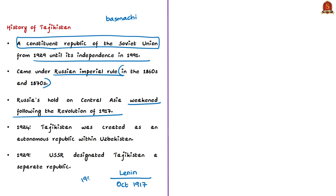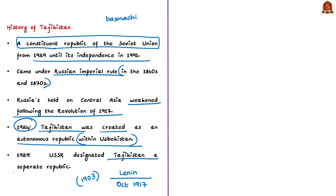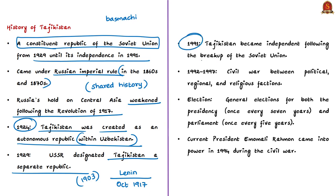Tajikistan was first created as an autonomous republic within Uzbekistan in 1924, and in 1929 the Soviet Union designated it as a separate republic. As a result of this shared history, ethnic Uzbeks form a substantial minority in Tajikistan, and ethnic Tajiks form an even larger minority in Uzbekistan. Tajikistan became independent in 1991 after the breakup of the Soviet Union, after which it experienced a civil war between political, regional, and religious factions from 1992 to 1997.